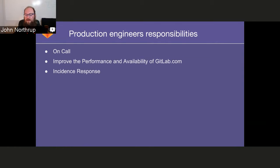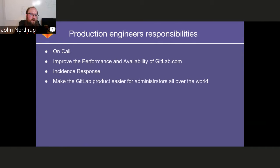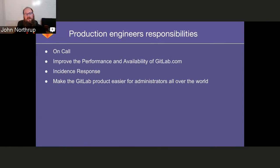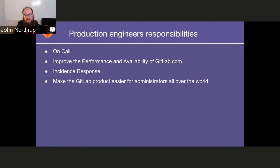We're doing incident response — anytime somebody says something is broken or doesn't work, that's what production engineers handle. We also have the ethos of making the GitLab product easier for administrators all over the world. As production engineers for GitLab, we not only keep things running, but because we're dogfooding and installing our product in our own environment, we have a feedback loop to make the product easier for other administrators. If during releases we see something that doesn't work or doesn't give an error message, it's on us to provide feedback and shape it up.